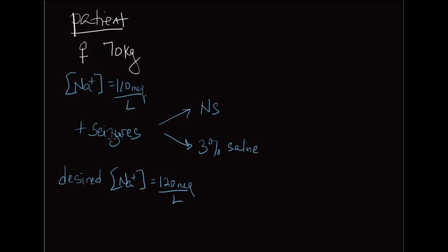So for this example, we need to go from a sodium of 110 milliequivalents per liter to 120 milliequivalents per liter, and we can do that by one of two methods, either through normal saline administration or 3% saline administration. We want to know how much of each. In this part of the tutorial, we're just going to focus on normal saline. How much normal saline do we have to give to go from 110 to 120?